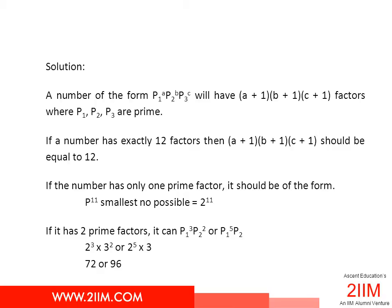2^11 is definitely greater than either of these two. So the smallest number which has exactly 12 factors is 72, unless we can find a number even smaller than this. Let us see if we can.